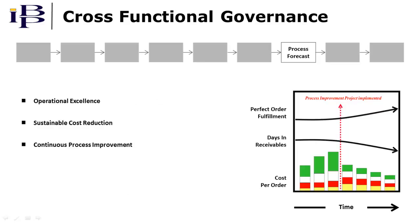The absence of such capabilities is one of the primary reasons why initiatives like operational excellence, continuous process improvement, and sustainable cost reduction fail to achieve lasting results. In fact, processes supported by legacy financial tools actually undermine these efforts because they reinforce functional silos, primarily because they offer no meaningful alternative to traditional functionally-based budgeting processes.